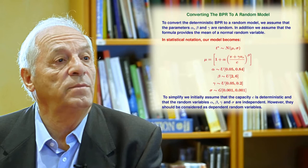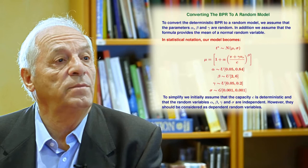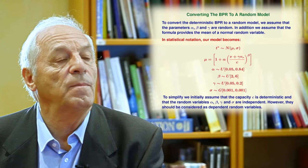To convert the deterministic model into random, because the alpha, beta and gamma of the initial model are deterministic, what we do is we assume some distribution for this.